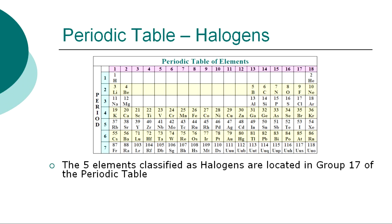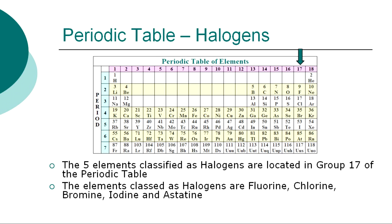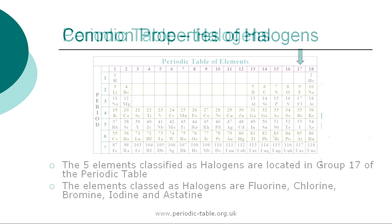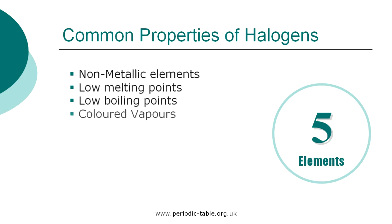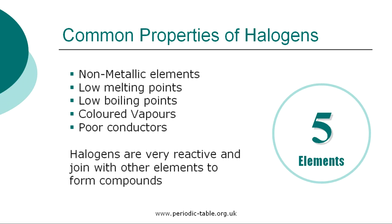The five elements classified as halogens are located in group 17 of the periodic table: fluorine, chlorine, bromine, iodine, and astatine. Halogens are non-metallic elements with low melting and boiling points. They have colored vapors and are poor conductors of heat and electricity. They are very reactive, so they are likely to join with other elements on the left side of the periodic table to make compounds.